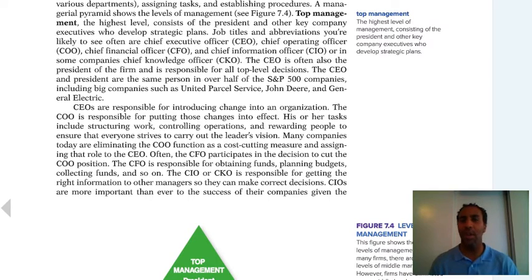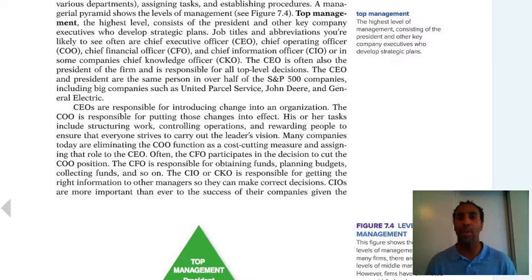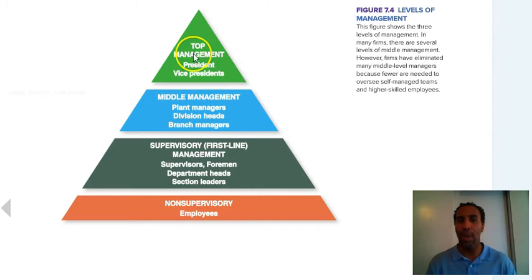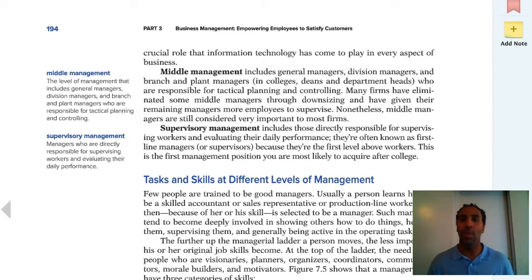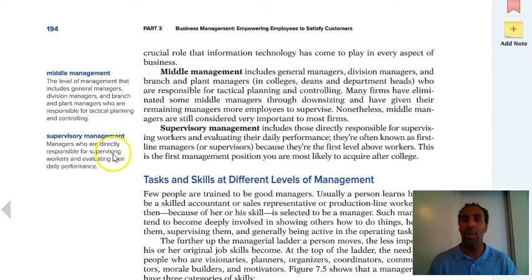Top management is the highest level of management consisting of the president and other company executives who develop strategic plans. It goes down to tactical for middle management — plant manager, division head, branch managers — then down to operational for supervisory or first-line managers: supervisor, foreman, department head, section leaders. Non-supervisory is everybody else — the employees. No matter where you are, you fit in as an integral part of that pyramid. Be sure to reread the definitions for middle management and supervisory management.